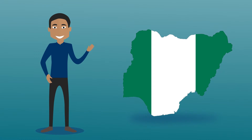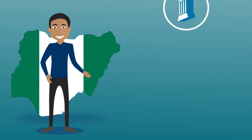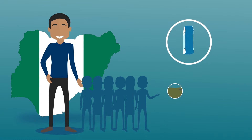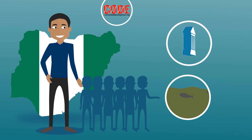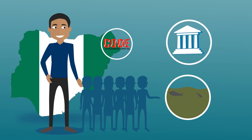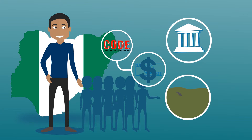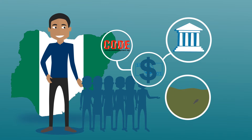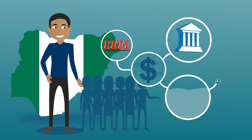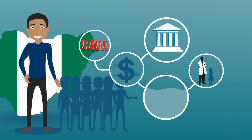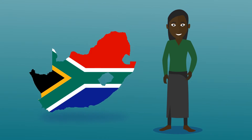In Nigeria, activist Hamzi is trying to get the government to clean up his village's polluted water supply. With the help of Connected Development, he is able to find out how much money his government allocated to the cleanup and put pressure on them to release the funds.